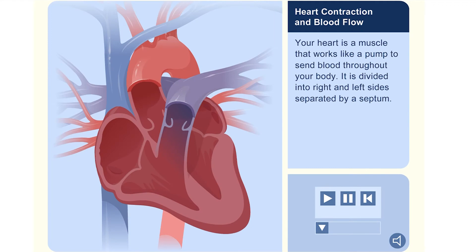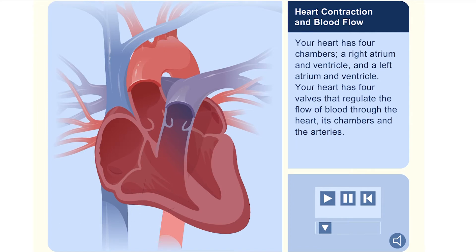Your heart is a muscle that works like a pump to send blood throughout your body. It is divided into right and left sides separated by a septum. Your heart has four chambers: a right atrium and ventricle, and a left atrium and ventricle.